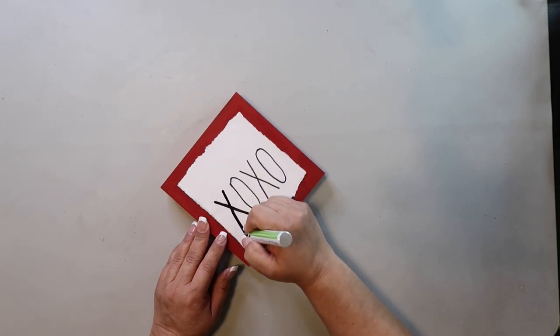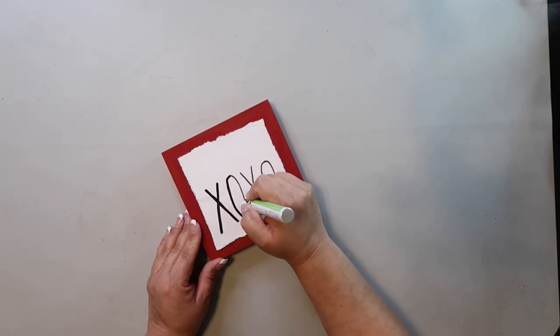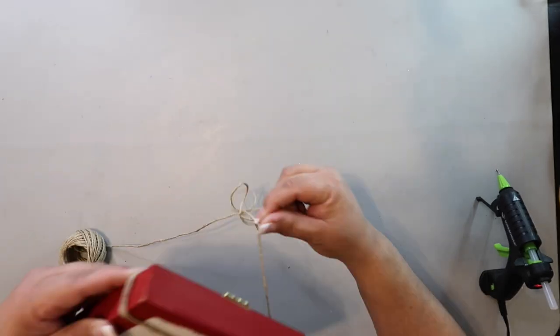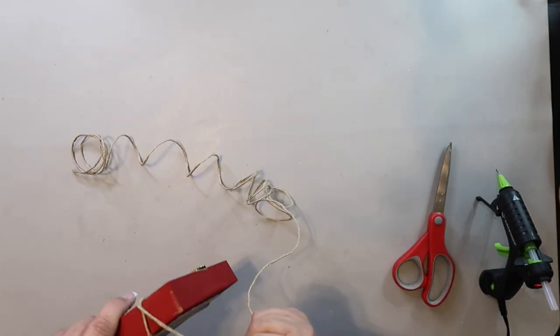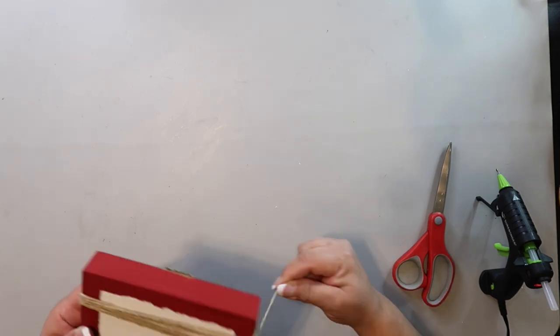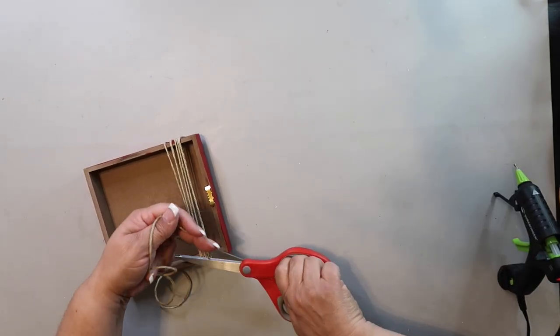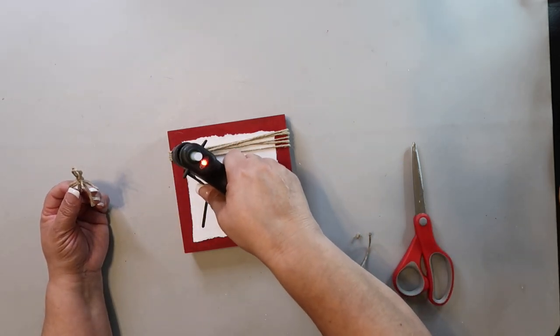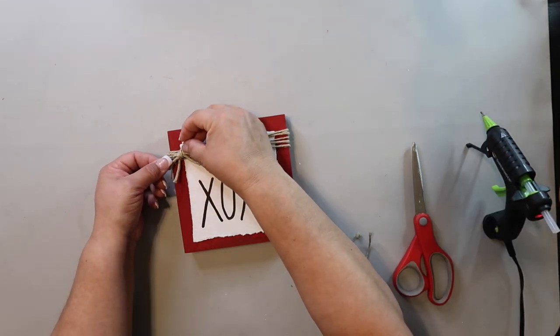Next I'm taking some jute twine and hot gluing one end and then wrapping it around five or six times across the top. I hot glue the other end and snip off the excess. I made a simple shoelace bow, the kind of bow that you do when you're tying shoes, and I hot glue that to the top left corner.